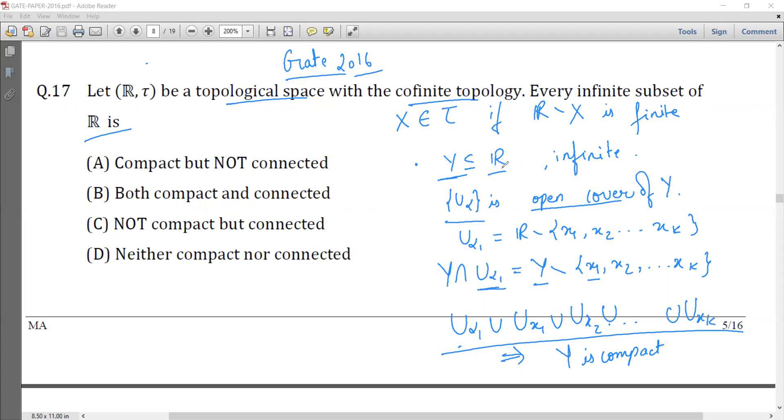So we could have started with an infinite topological space with cofinite topology and prove that an infinite topological space with cofinite topology is compact. So C is not the answer and D is not the answer.